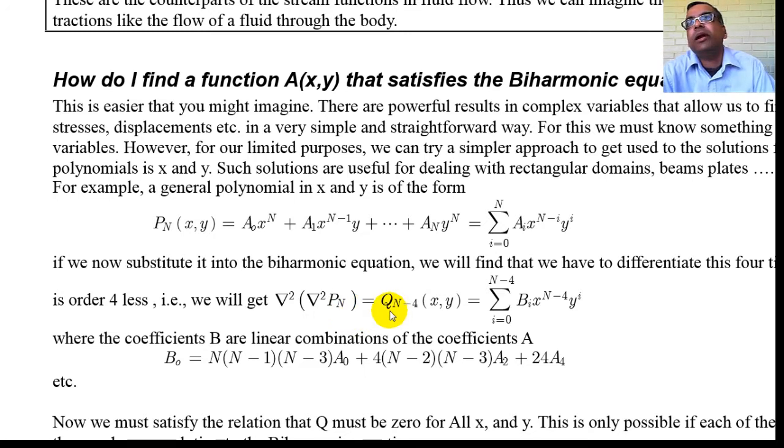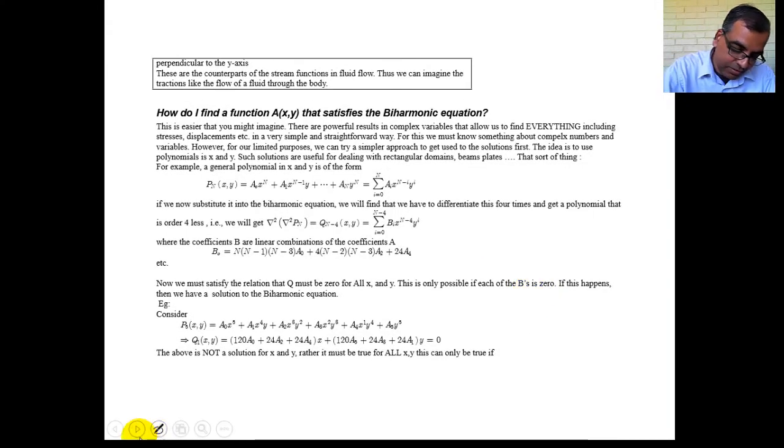So this is my polynomial. I do del squared of del squared of P_n. That will give me some other polynomial. If you differentiate a polynomial you will get another polynomial. This polynomial will be four orders less, so you will get summation i equal to zero to n minus four, B_i x^(n-4-i) y^i.